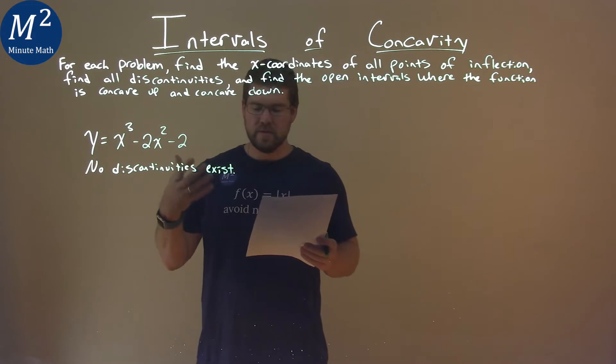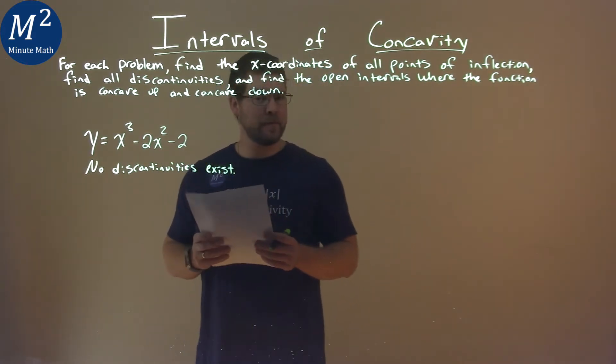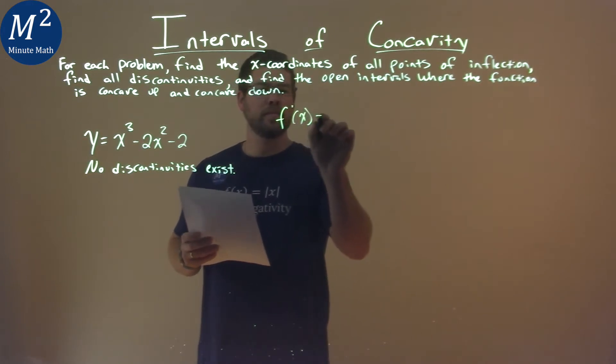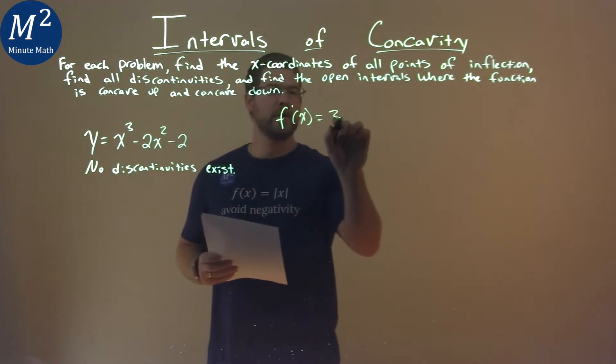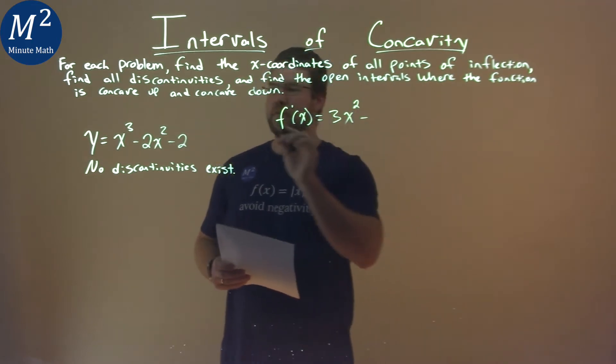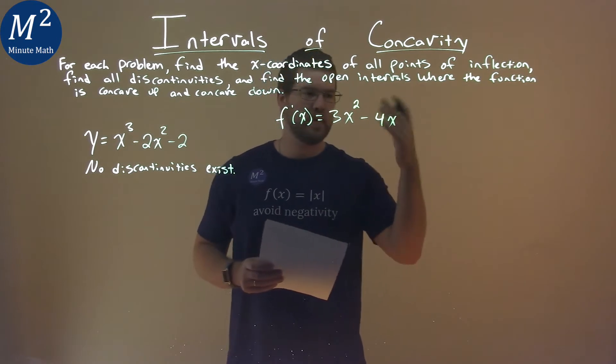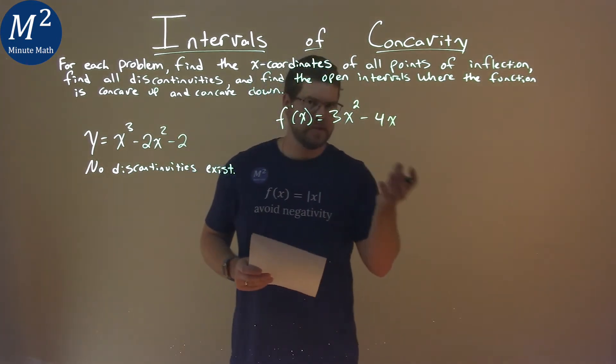To find my points of inflection, I need to take the second derivative, but first I need to take the first derivative. So f'(x), using the power rule: 3 comes down, x subtract the exponent by 1 is x², minus 2 times 2 is 4x. The derivative of the constant is 0.